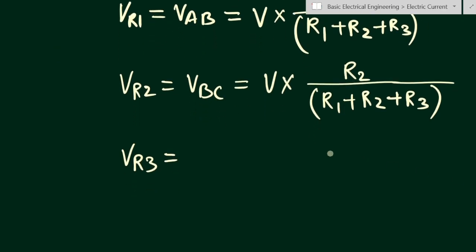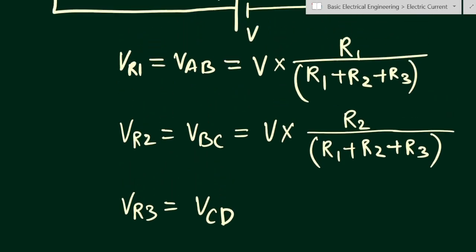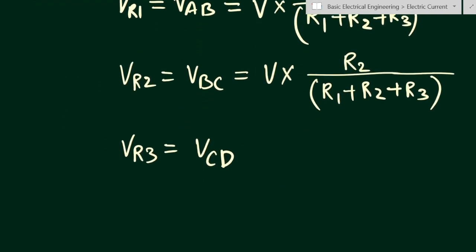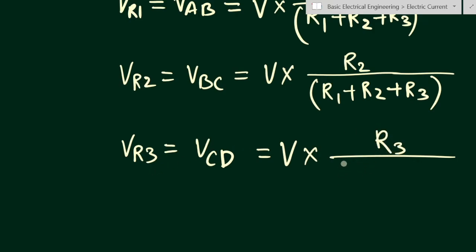What will be V_R3? V_R3 equals V_cd, because we have considered points c and d across resistance R3. So V_R3 equals total voltage V into R3 divided by R1 plus R2 plus R3. We put the target resistance R3 in the numerator and all resistances in the denominator.